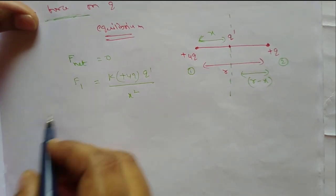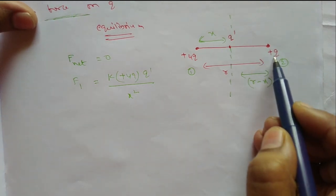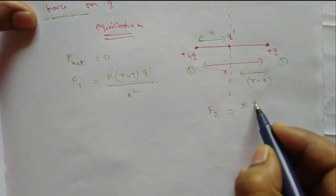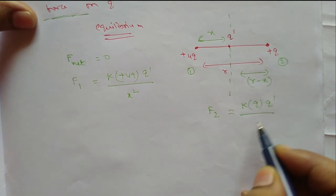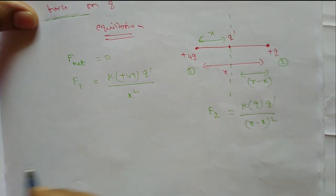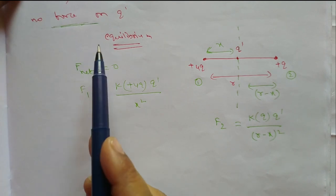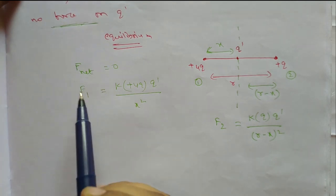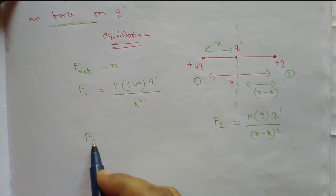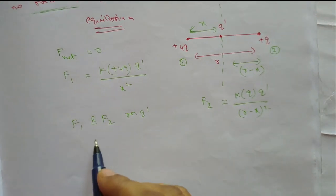The next force is the force due to plus q charge on q dash, which is F2. It equals k times q times q dash divided by (r minus x) squared, since the distance from q dash to plus q is r minus x. Given that there is no force on q dash, it is in the equilibrium state, meaning F net equals zero. So F1 and F2 are both acting on q dash and their net becomes zero.